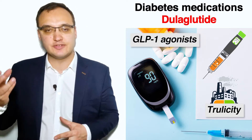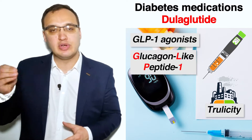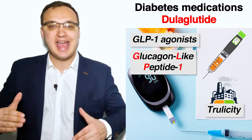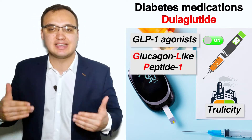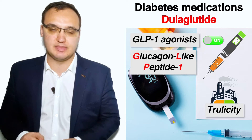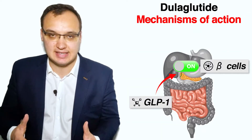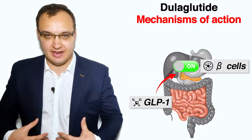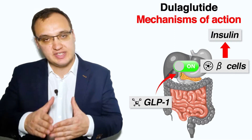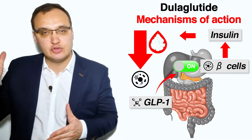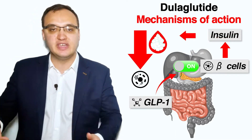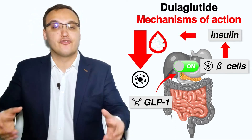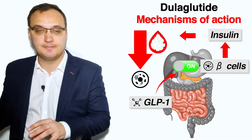GLP-1 stands for glucagon-like peptide 1, and the agonists refer to these agents activating some receptors in some cells called the beta cells, in an organ called the pancreas. And this will secrete insulin, which further goes into the blood to move the glucose — which is sugar — from the blood into the cells.